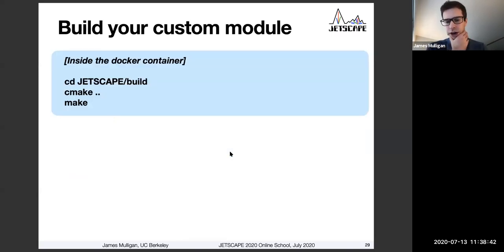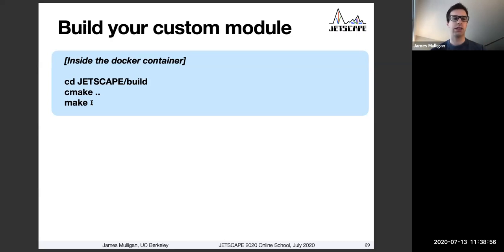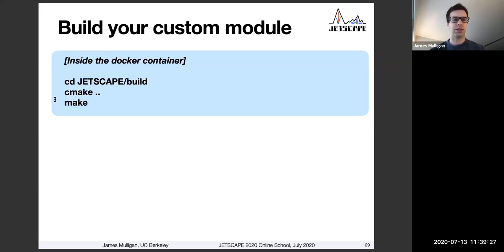Now that we've copied the example file of a new module into the source directory next to all the other modules, all we have to do is build Jetscape again. We did this already in the prep instructions. Now that we've put that file there, execute these commands: change directory to the Jetscape slash build directory, then run CMake dot dot, and then run make again. This will compile much more quickly than the first time, since it only needs to compile things that have changed.